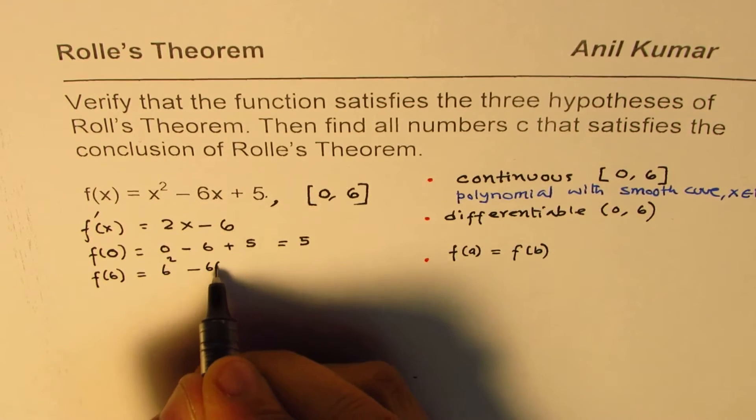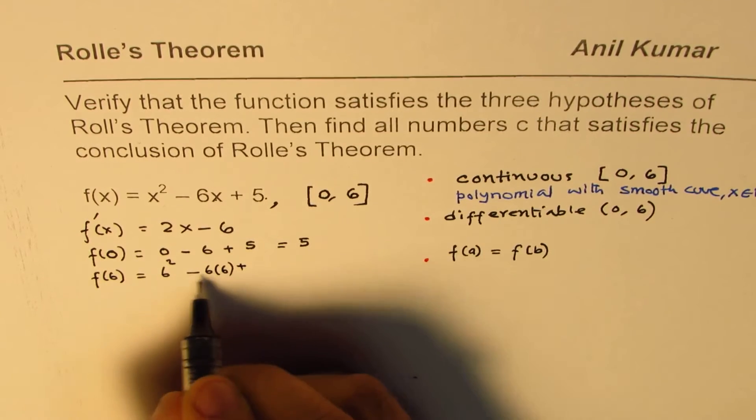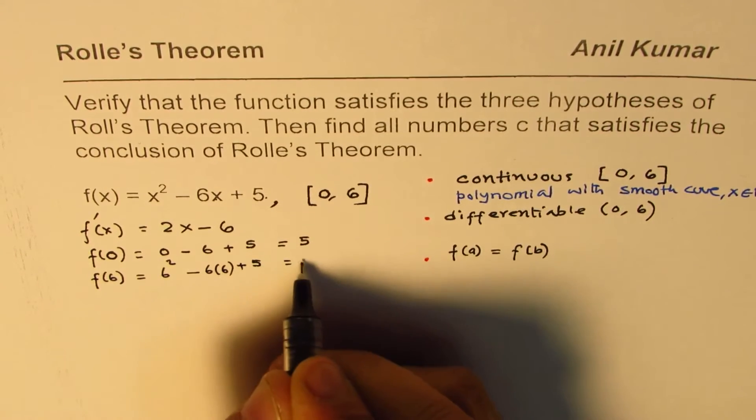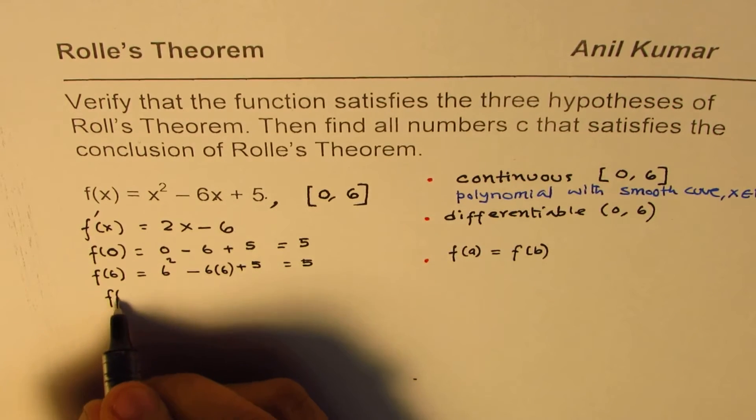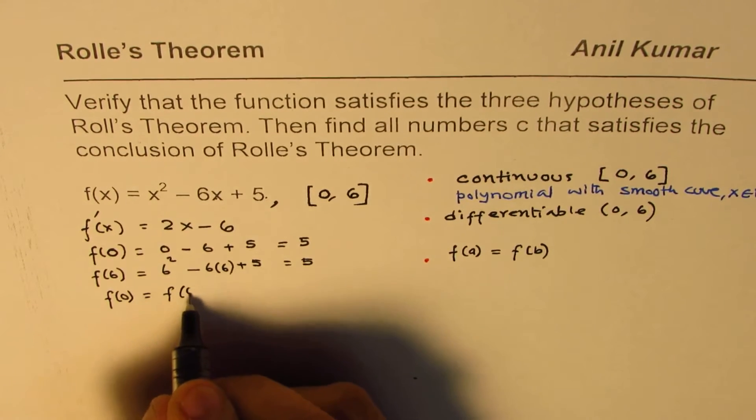...minus 6 times 6, which is also 36. So, they will be 0 + 5, we get 5. So, we know f(0) equals f(6).